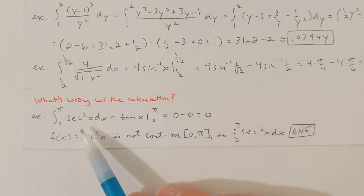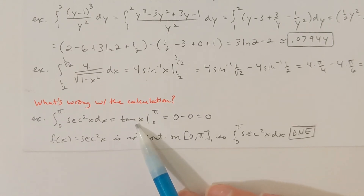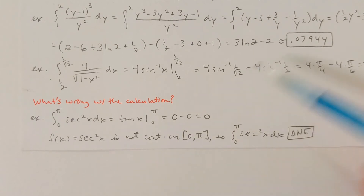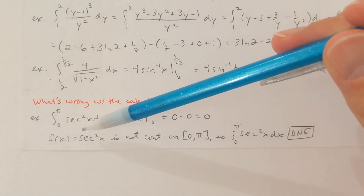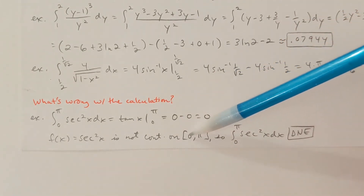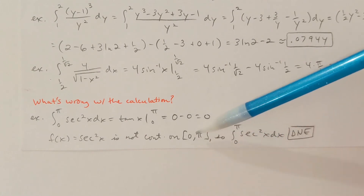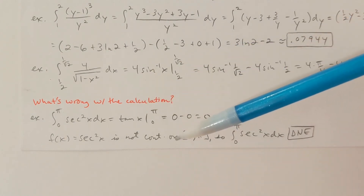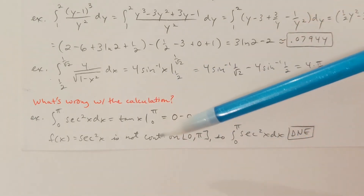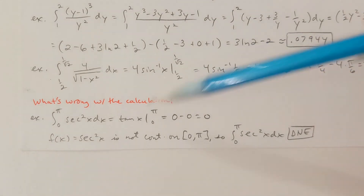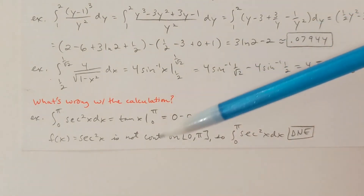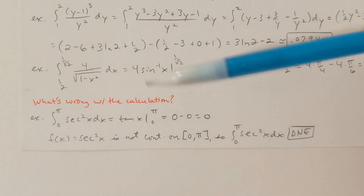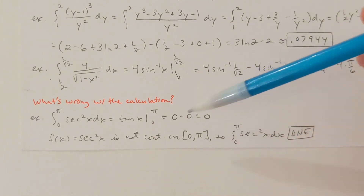What's wrong with this calculation? I know the antiderivative of secant squared x is tan x. Tangent of pi is 0, tangent of 0 is 0, so you get 0. But that's not correct, because secant x is not continuous on the interval 0 to pi — there's a vertical asymptote at pi over 2. Secant x is defined as 1 over cosine x, and cosine of pi over 2 is 0, so I can't divide by 0. Be careful: don't just blindly calculate assuming continuity on the entire interval. Double check and make sure the function actually is continuous on the interval before doing the calculation.